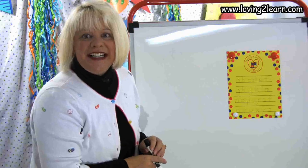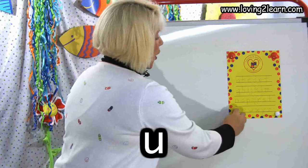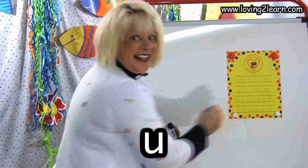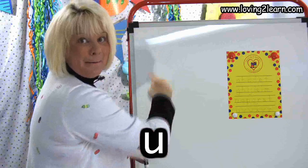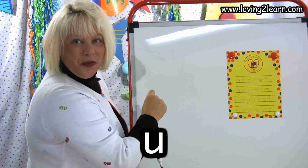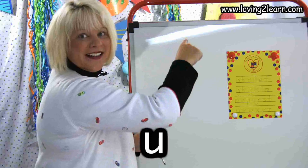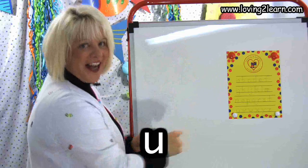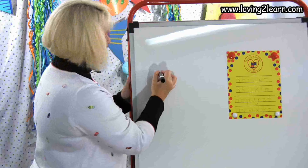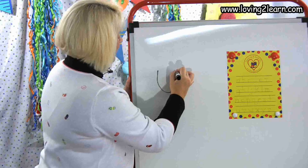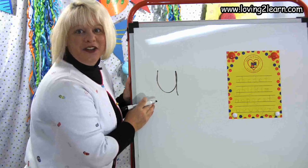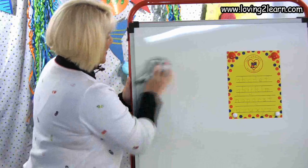The next letter is U. We go bucket, straight line down. Do it with me: bucket, straight line down. Let's write it on the wipe-off board: bucket, straight line down. There's the letter U.